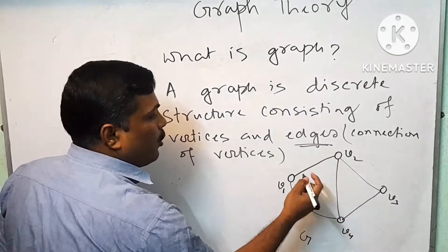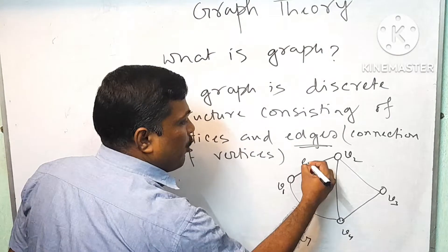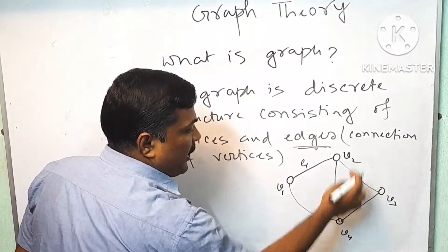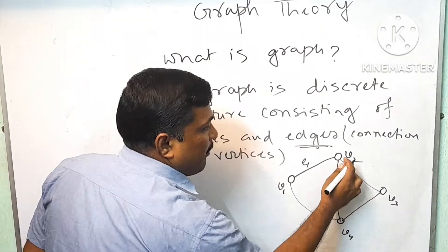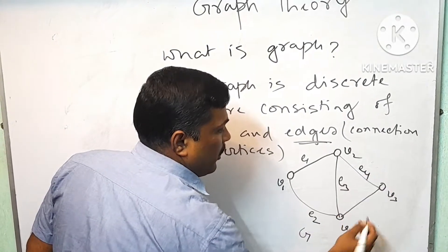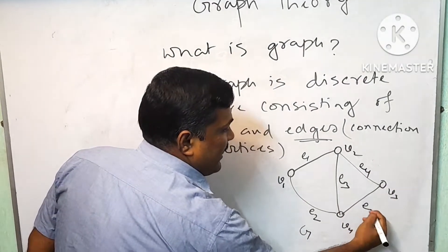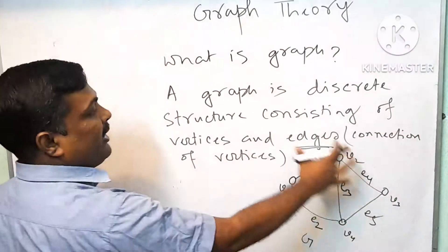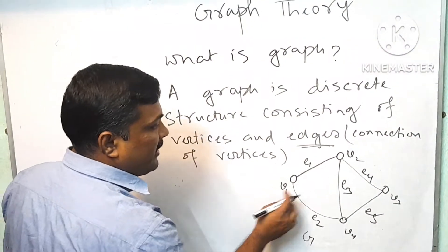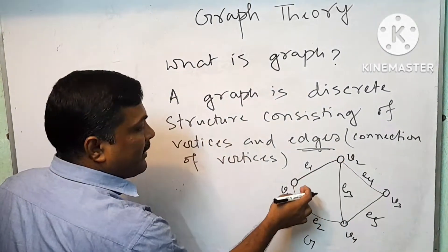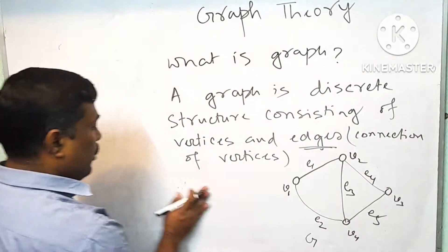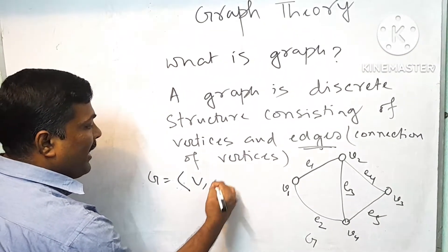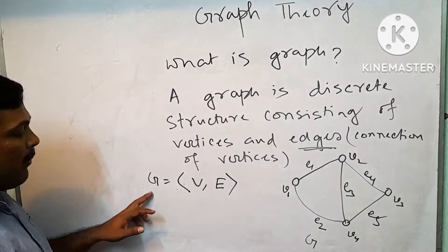The connection from V1 to V2 is suppose E1, V1 to V4 is suppose E2, V2 to V4 is suppose E3, V2 to V3 is suppose E4, V3 to V4 is E5. So a graph G equals to (V, E).